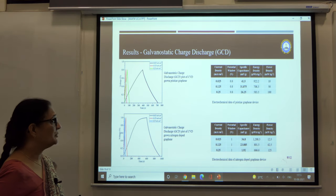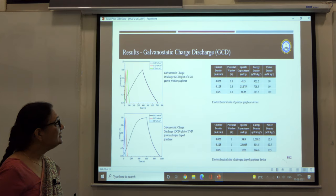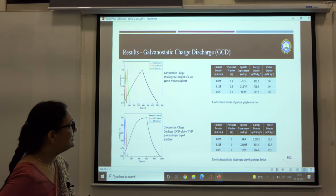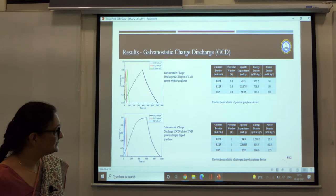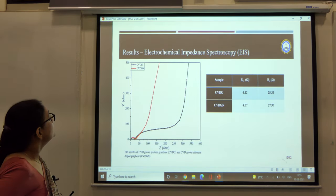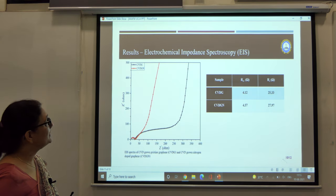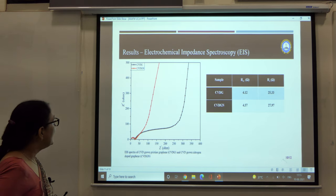Better electrochemical performance was seen by the nitrogen doped graphene in terms of power density as well as energy density. This gives you the electrochemical impedance spectroscopy EIS behavior of the two samples.